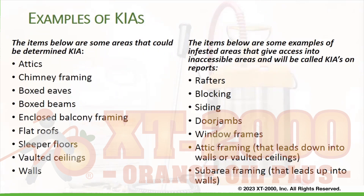Examples of KIAs: Items on the left are areas that could be determined KIA — attics, chimney framing, box stoves, box beams, enclosed balcony framing, flat roofs, sleeper floors, vaulted ceilings, and walls.